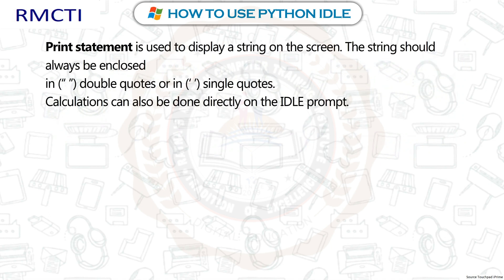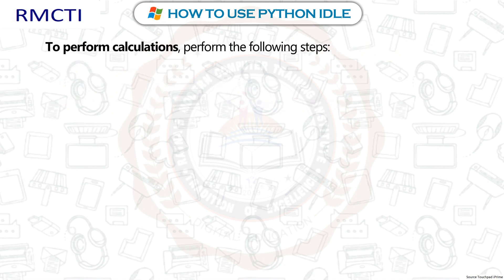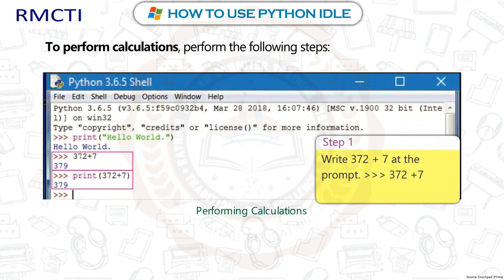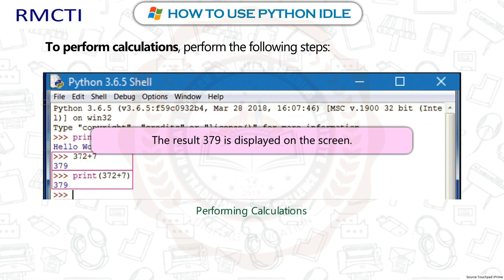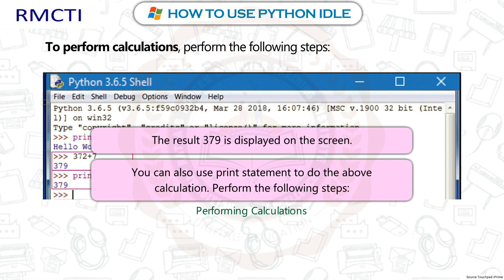The print statement is used to display a string on the screen. The string should always be enclosed in inverted commas — double quotes or single quotes. Calculations can also be done directly on the IDLE prompt. Step 1: Write 372 + 7 at the prompt. Step 2: Press the Enter key. The result 379 is displayed on the screen.